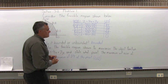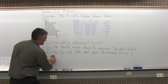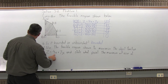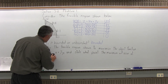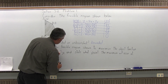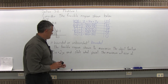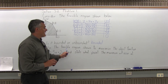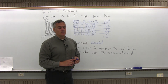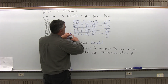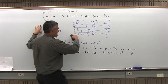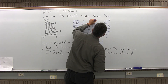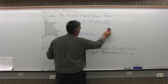The next part is very similar. I'm going to change the object function again for part D. The 4x becomes 5x and the 7y becomes 2y. So we want to use the feasible region shown to maximize the object function z equals 5x plus 2y and state the point at which the maximum will occur. Same chart, same corner points, but the object function changes to z equals 5x plus 2y.